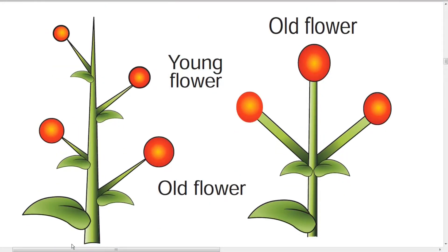In racemose inflorescence, the older flowers will be at the bottom. The main axis — the peduncle — possesses a terminal bud capable of growing continuously, producing lateral buds. In cymose inflorescence, the central axis stops growing and ends in a flower; further growth is by means of axillary buds. Older flowers are present at the apex, and younger flowers are at the base.